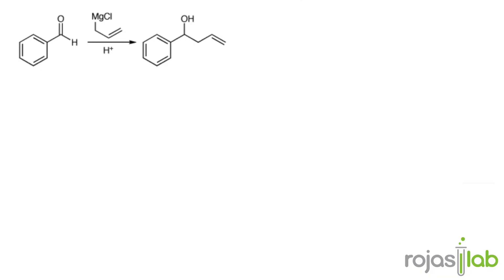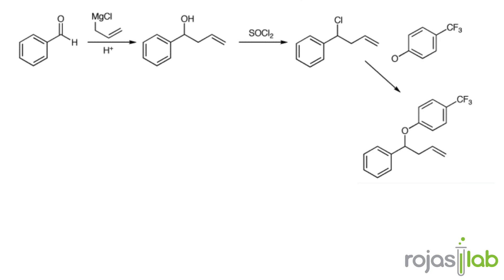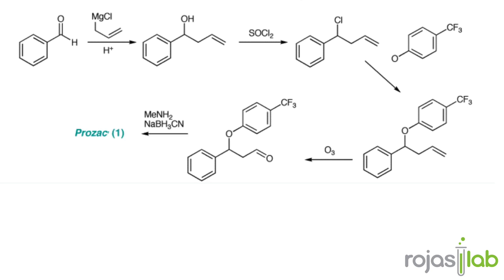So to recap: the first step is to take benzaldehyde and form a new carbon-carbon bond using a Grignard reagent, giving us an alcohol. Subsequently, we can substitute the alcohol for a chloride using thionyl chloride, bringing in our initial starting material. If we deprotonate it with a base to make a phenoxide, then it will do a substitution reaction at that alkyl chloride position. Next, ozonolysis allows us to turn that alkene into an aldehyde, which we can then use to do reductive amination using methylamine and sodium cyanoborohydride to synthesize Prozac.